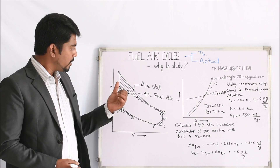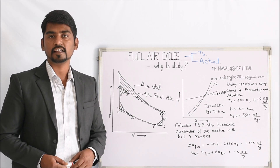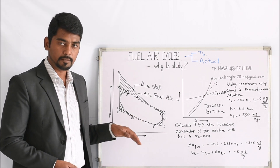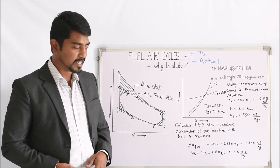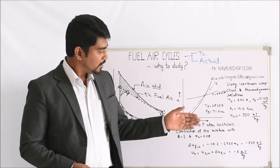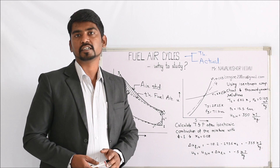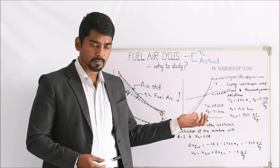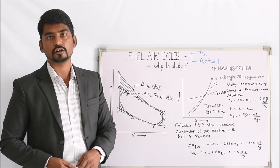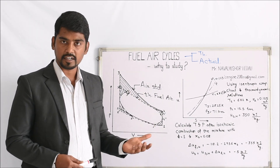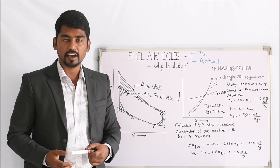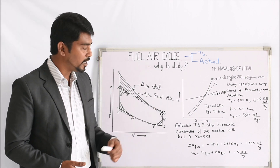In today's lecture, we have covered the air standard cycle, theoretical fuel air cycle, and actual fuel air cycle — how they differ from each other with respect to work done, shown by the PV graph. We have seen one example where we determine temperature and pressure conditions after the combustion process. The same method can be applied to the constant pressure heat addition process with different charts as per the equivalence ratio. Next time we are going to study the effect of specific heat on the combustion process — its effect on temperature, pressure, and volume. Thank you very much. Keep watching and keep enjoying the study of IC engine.